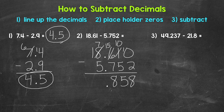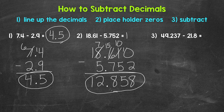We bring the decimal straight down into our answer. Then we have seven minus five, which gives us two. And then we have a one in the tens place. So our final answer is 12 and 858 thousandths. So 18 and 61 hundredths minus five and 752 thousandths equals 12 and 858 thousandths.